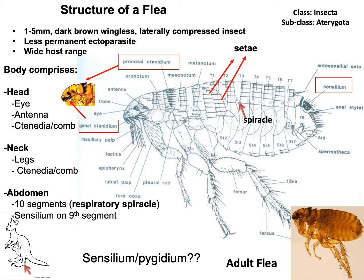What is a flea? A flea is a very tiny external parasite measuring 1 to 5 millimeters in length, dark brown in color, wingless, and laterally compressed body — remember, laterally compressed, not dorsoventrally flattened. They are less permanent or temporary ectoparasites because they frequently leave the body of the host.